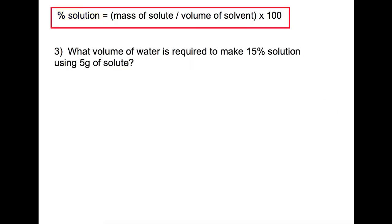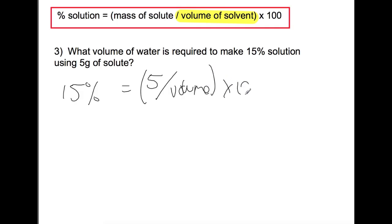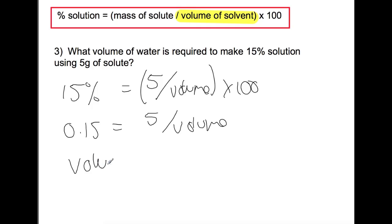In the final question, we're trying to find the volume of solvent required to make a specific solution. We're making a 15% solution with 5 grams of solute and need to find the volume of water needed. Rearranging the equation — dividing both sides by 100 gives 0.15 equals 5 divided by volume — we find that we need 33.3 millilitres of water.